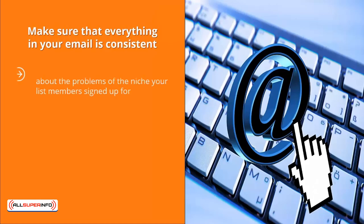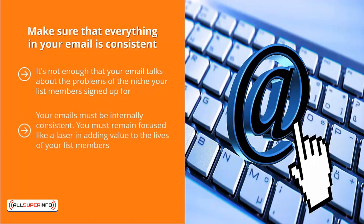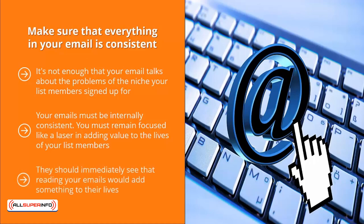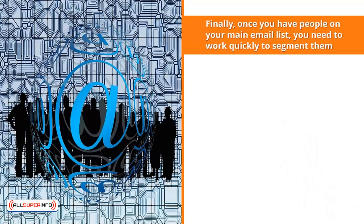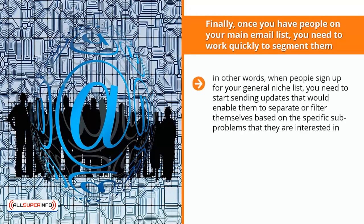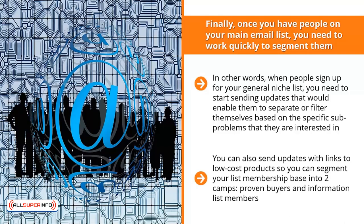Make sure that everything in your email is internally consistent. It's not enough that your email talks about the problems of your niche — your emails must remain focused like a laser on adding value to your list members' lives. They should immediately see that reading your emails adds something to their lives. Once you have people on your main email list, you need to work quickly to segment them, sending updates that enable them to filter themselves based on the specific sub-problems they are interested in.